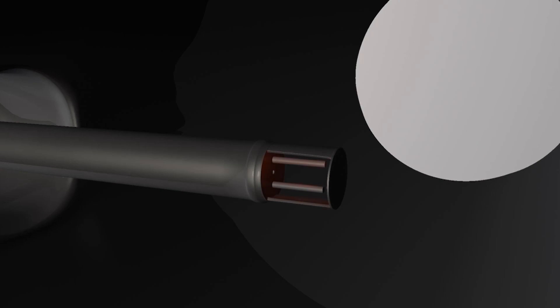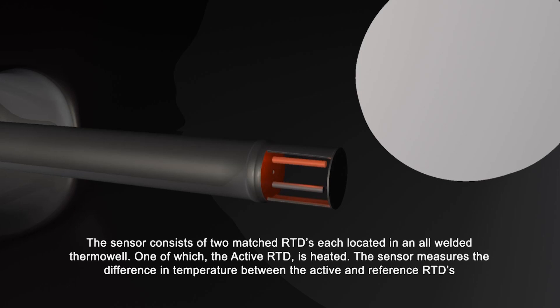The sensor consists of two matched RTDs, each located in an all welded thermal well, one of which, the active RTD, is heated. The sensor measures the difference in temperature between the active and reference RTDs.